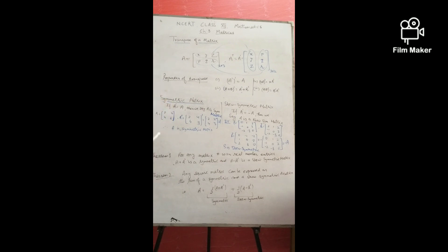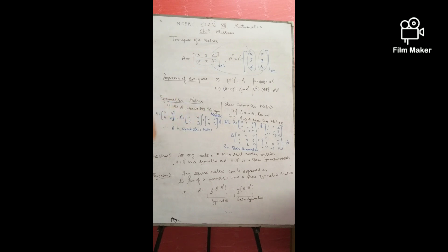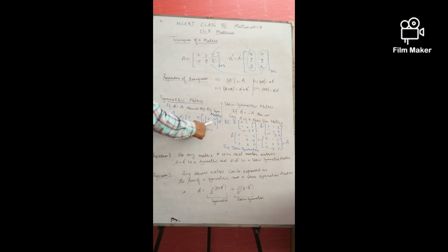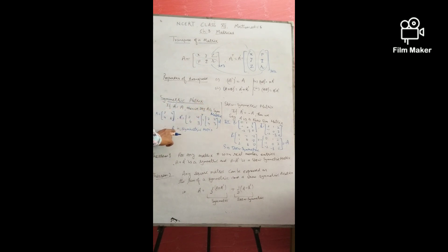Now, the symmetric matrix: any matrix that satisfies A transpose = A is called a symmetric matrix. For example, the matrix [2, 4; 4, 3] — when you take its transpose, you interchange the rows and get [2, 4; 4, 3] back, which is the same as the original. So this is a symmetric matrix.